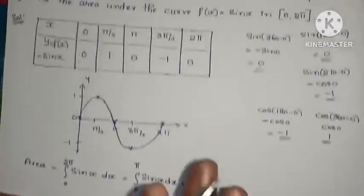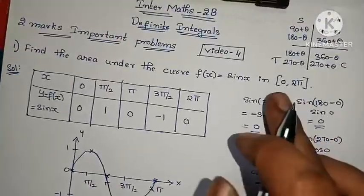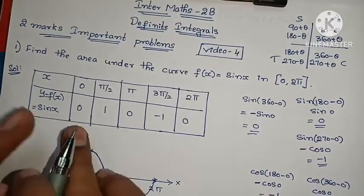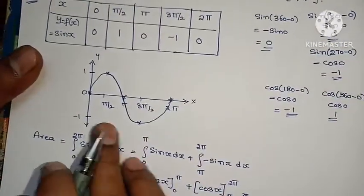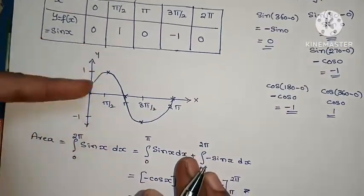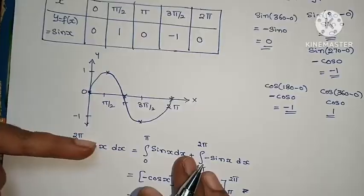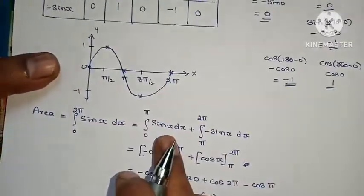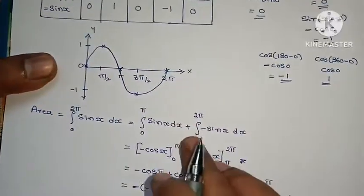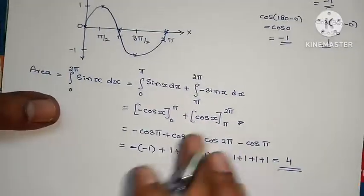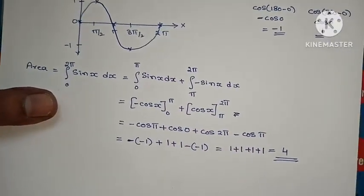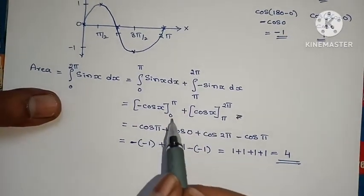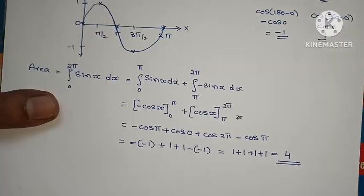This problem is complete. Simply, from 0 to 2π, the graph gives positive values from 0 to π on the positive y-axis, and negative values from π to 2π on the negative y-axis. Integrating sin x gives −cos x. Applying upper limit minus lower limit gives the result. Do you understand?